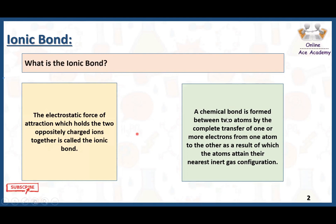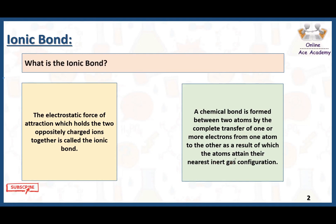In other words, a chemical bond is formed between two atoms by the complete transfer of one or more electrons from one atom to the other, as a result of which the atoms attain their nearest noble gas configuration.